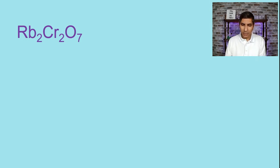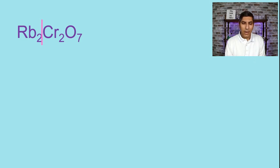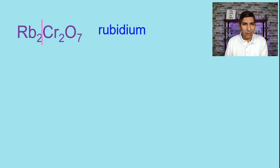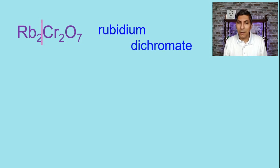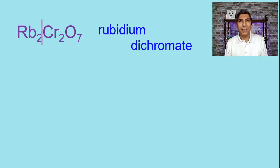Let's try Rb2Cr2O7. Split it right down the middle. Rb has the name rubidium — an element we don't use all the time, but it's on the ion chart. Cr2O7 is a polyatomic ion, and we can look on the chart and see that its name is dichromate. So rubidium dichromate is the name of this compound.